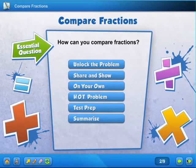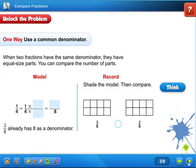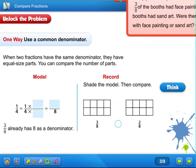The lesson before we did this with benchmarks and I did show you a little trick. So today we're going to look at two different ways to do it and I will show you the little trick again. So the first way we're going to do it is to use a common denominator. So let's read the problem.